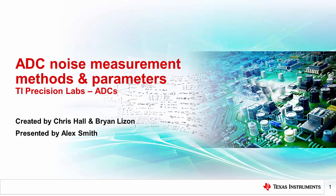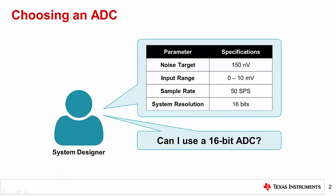To motivate why this discussion is important, let's attempt to choose an ADC for some arbitrary application. Here's a typical question from a system designer: in my end equipment, I have determined our noise target is 150 nanovolts. The input range is 0 to 10 millivolts, and we need to sample at 50 samples per second. This requires approximately 16 bits of resolution. Does that mean I can use a 16-bit ADC? If you just needed 16 bits of resolution, it would be difficult but possible to get this from a 16-bit ADC. However, you absolutely could not use a 16-bit ADC for this system due to the additional low-noise and small input range requirements, though it's not always clear why.